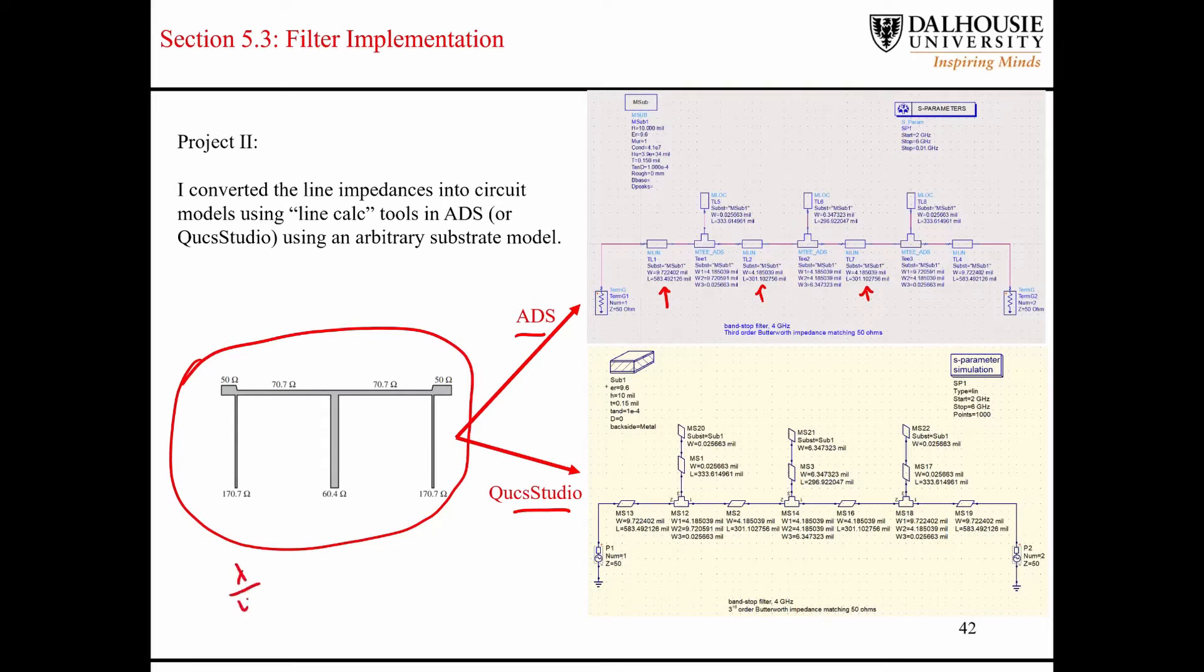I know that we are using a quarter wavelength, so in terms of electrical lengths, that's 90 degrees. In the line calc tool in ADS, and there's also one in QUCS Studio, you can define the electrical length of the line segments that you're trying to design. You can use the synthesis part. You plug in all the parameters for your substrates and your frequency of operation, and you give it your desired characteristic impedance, and you hit the synthesize button, and it works out the widths of the transmission lines.